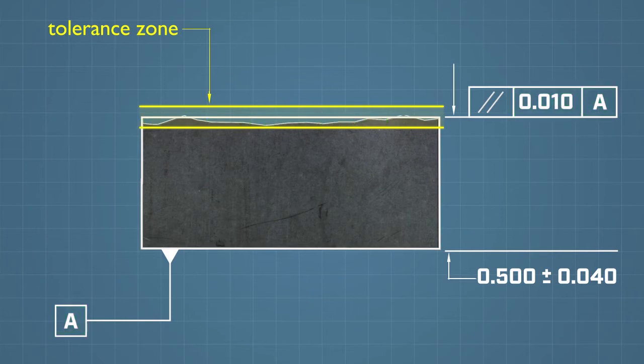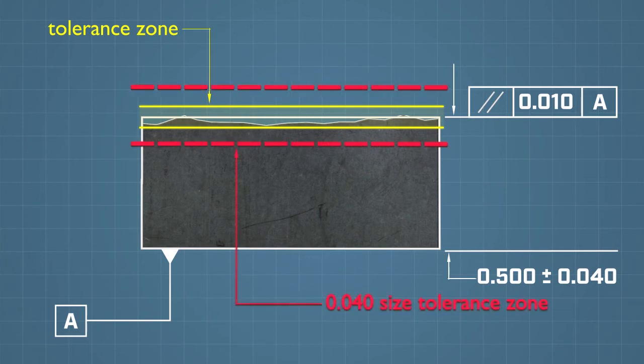The planes may be anywhere within the tolerance zone established by the feature of size. The size tolerance in this example also controls the parallelism of the surface within a forty-hundredths wide tolerance zone.